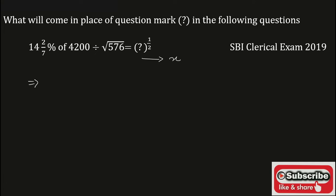Now 14 2/7 can be written as 100/7 percent of 4200, which is times 4200 divided by square root of 576, which equals 24, which equals x to the power 1/2. Again, 100/7 percent is 100/7 divided by 100 times 4200 divided by 24 equals x to the power 1/2.